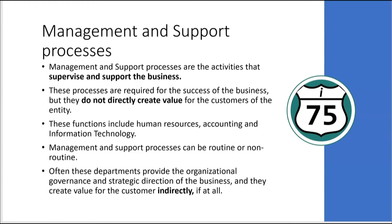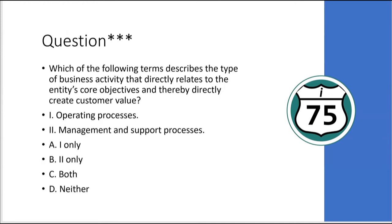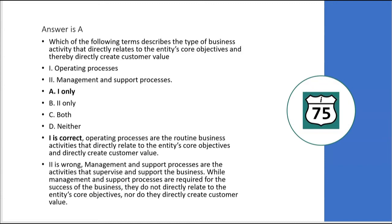Let's try a practice question. Which of the following terms describes the type of business activity that directly relates to the entity's core objectives and thereby directly creates customer value? Number one: operating processes — yes, that directly relates to the entity's core objectives and directly creates customer value. Number two: management and support — no, because while accounting and human resources are required for business success, they do not directly relate to core objectives nor directly create customer value. The answer is A, operating processes only.